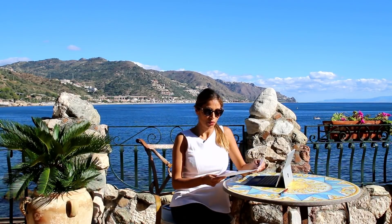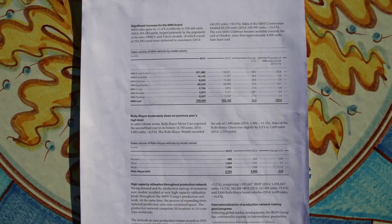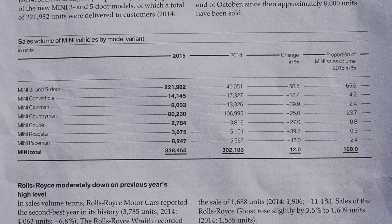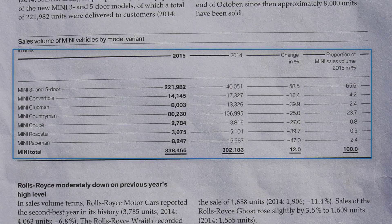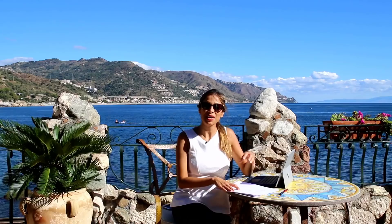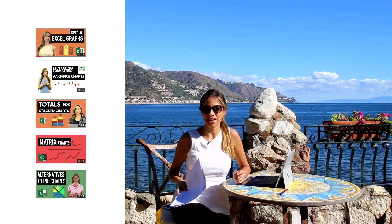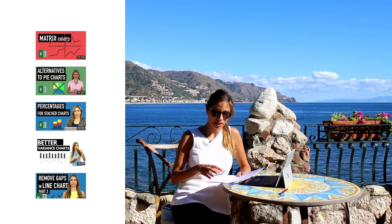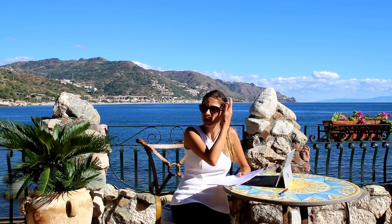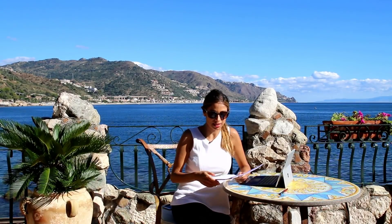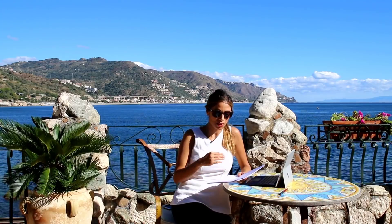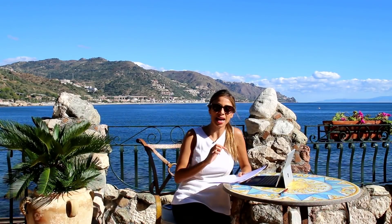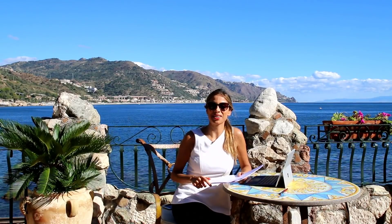In today's video, what I'd like to cover is this case. This table shows the 2015 sales volume information for each Mini model, the comparison to the previous year (2014), and the proportion of Mini sales volume compared to the total. Now if you're familiar with this channel, you know I'm a big fan of Excel charts and graphs, but I also think that tables have their place in reports — you don't always have to use a chart. In this specific case, though, I think using the proper visualization with the right combination of charts could actually do this more justice.